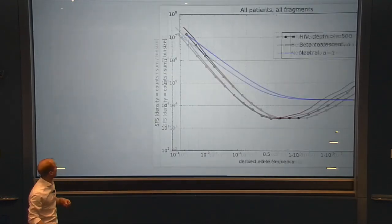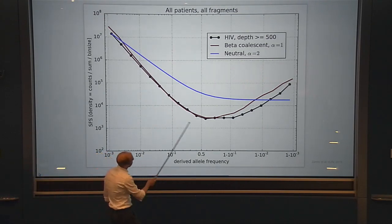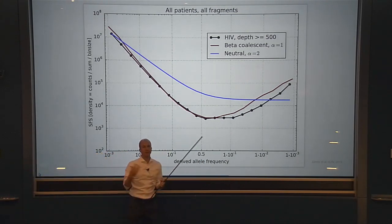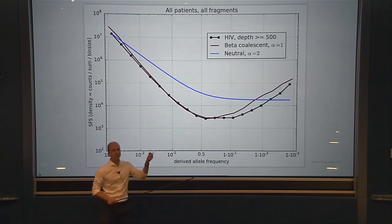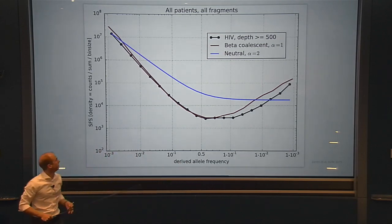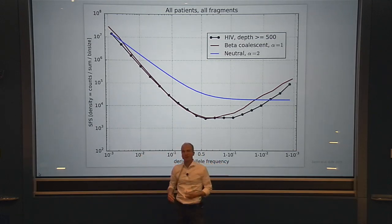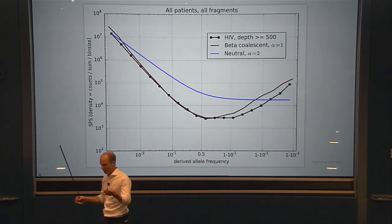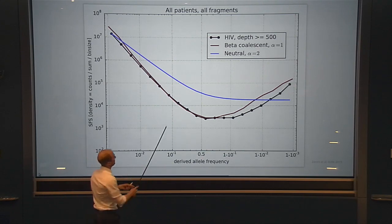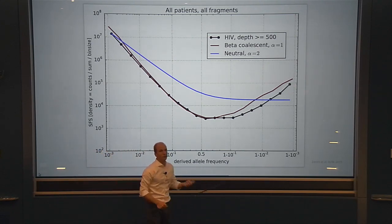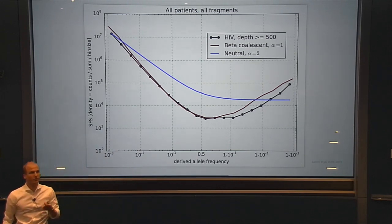Do we see this in HIV? Yes. The black curves are HIV data, the red curve is the prediction from the Bolthausen-Sznitman coalescent model — slightly wiggly because it's from simulation — and the blue curve is what the neutral model predicts. The neutral model is not a good fit, while the beta coalescent model is a much better departure point for understanding specific features of HIV evolution within an individual.